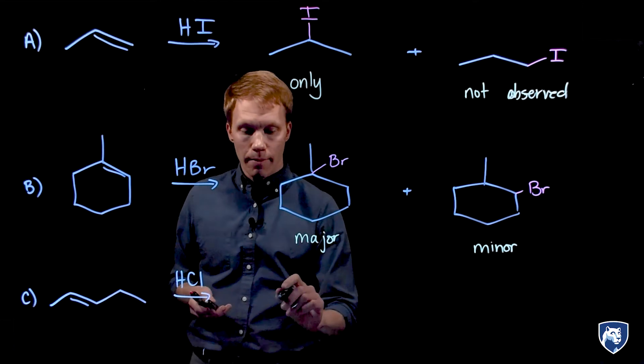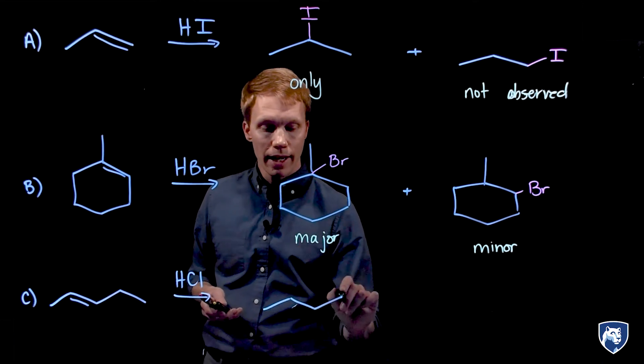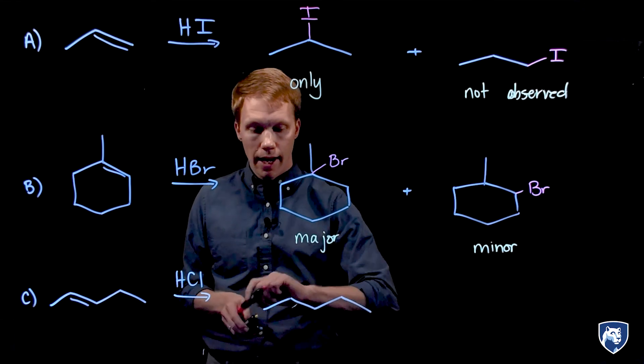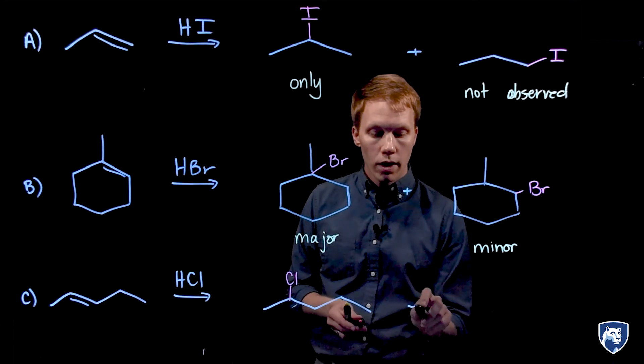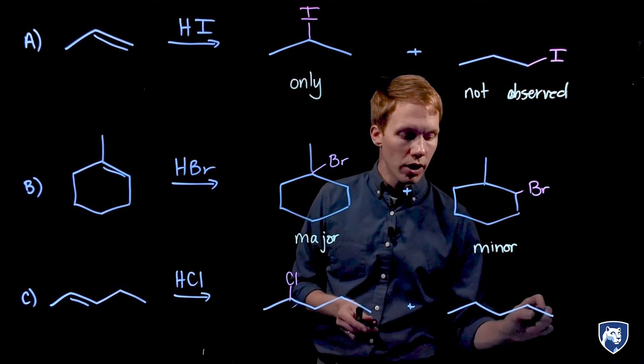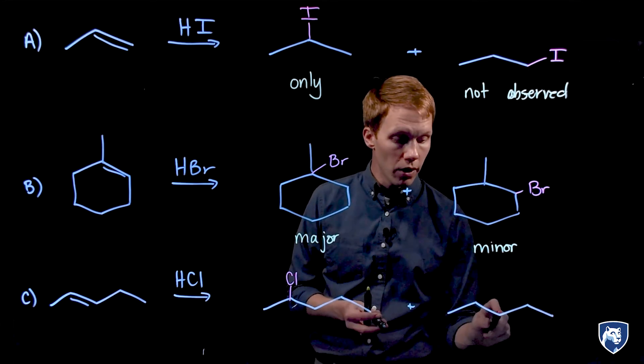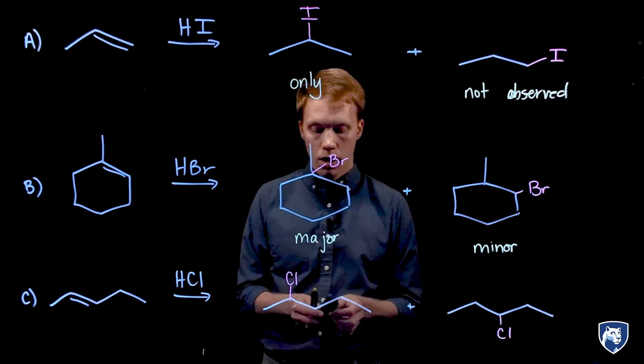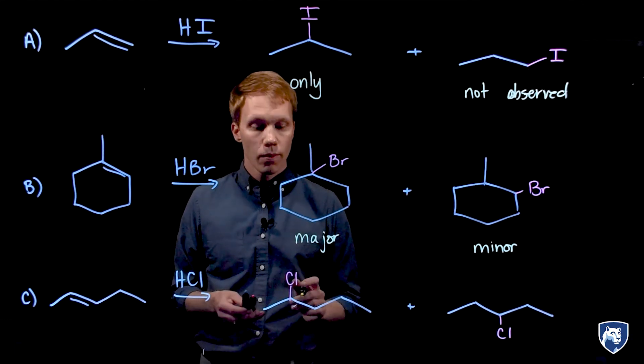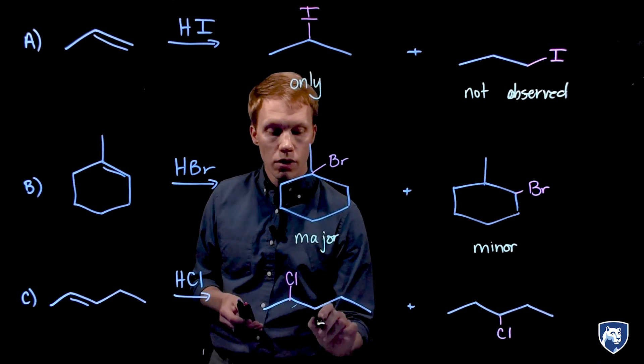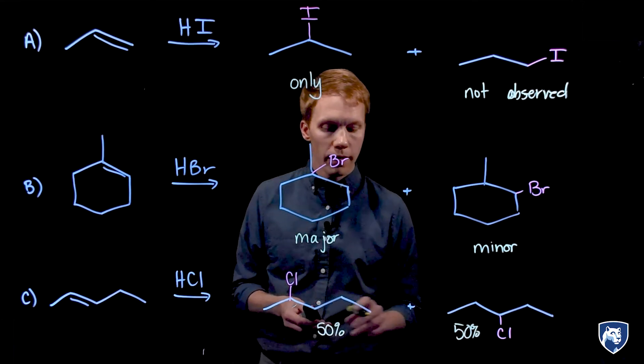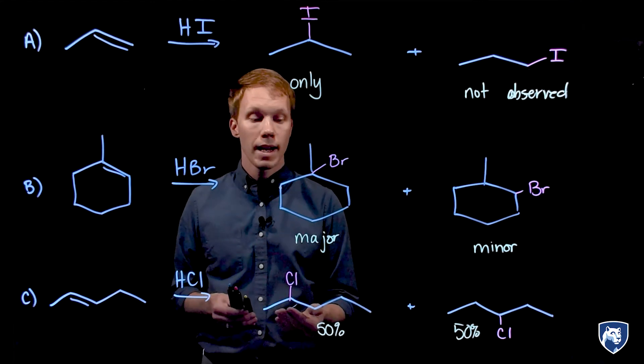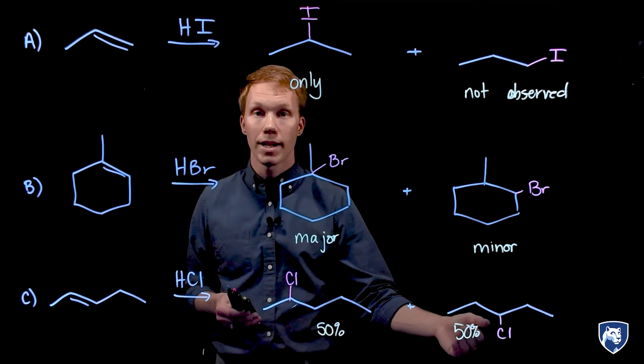In our final example, we have an alkene that could yield a halogen on position two of our carbon chain or we could add that halogen to position three on our carbon chain. Upon analysis here, we find that these two products are produced in equal amounts. We get 50% 2-chloropentane and 50% 3-chloropentane.